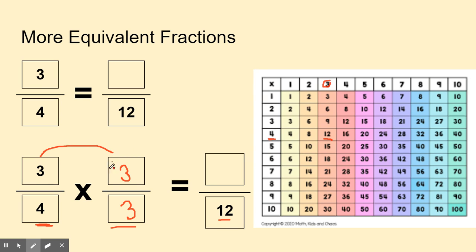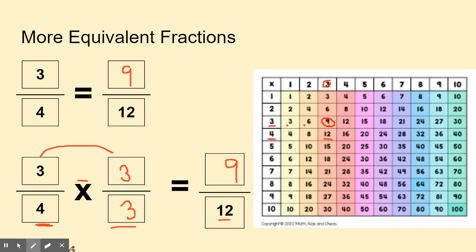What we do to the denominator we also have to do to the numerator, so three will go in that box. We multiply the denominator by three to get twelve, so we also have to multiply the numerator by three. Three times three: one, two, three, nine — three times three is equal to nine. So three-fourths is equivalent to nine-twelfths, and we multiplied three-fourths by three.